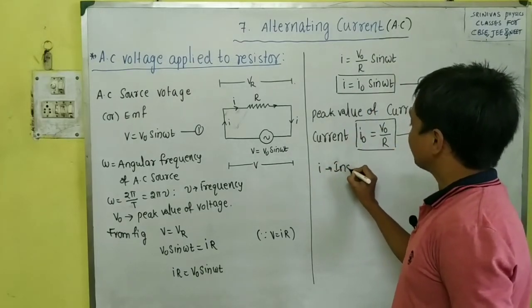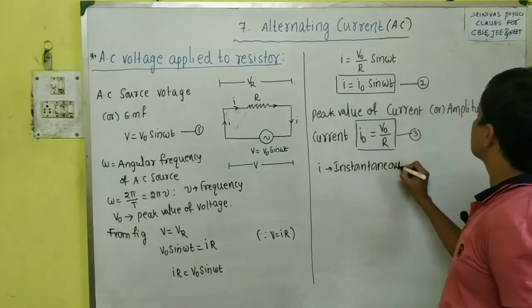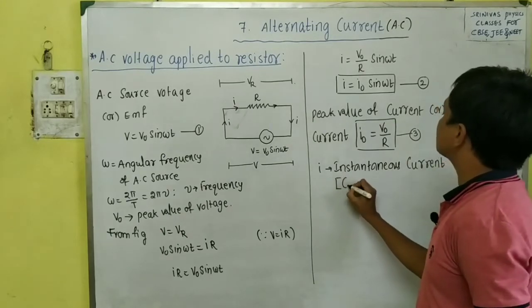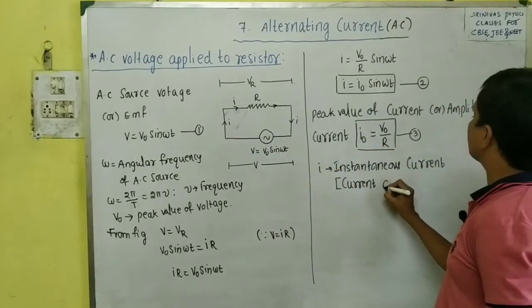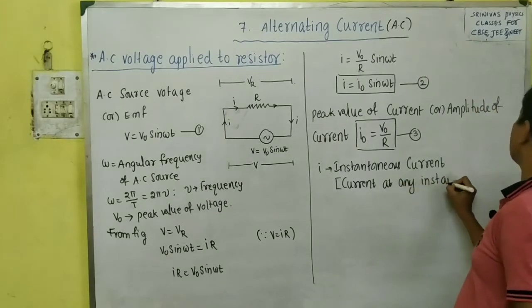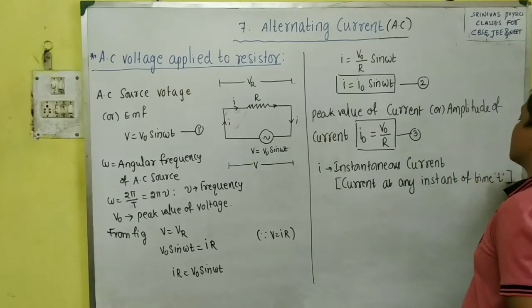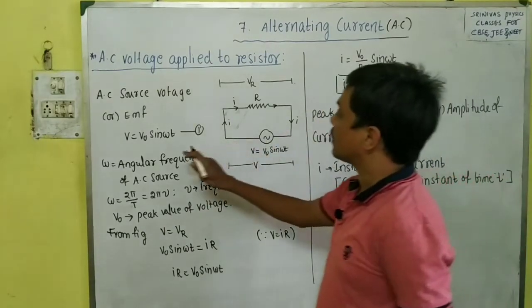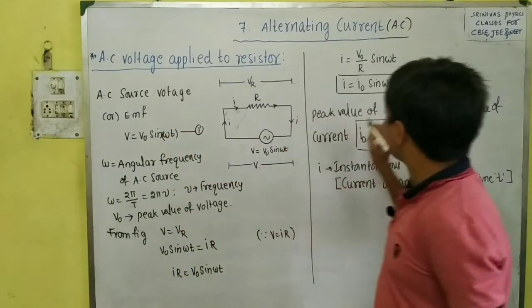Here, I is the instantaneous current. Instantaneous current means the current at any instant of time — specifically, the current passing through resistance R at any instant of small t. This is the instantaneous current.